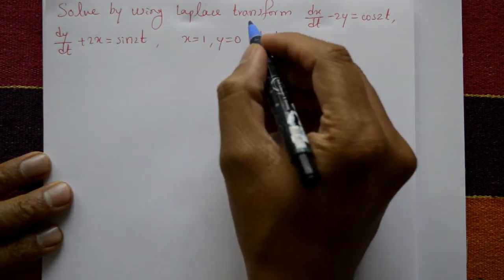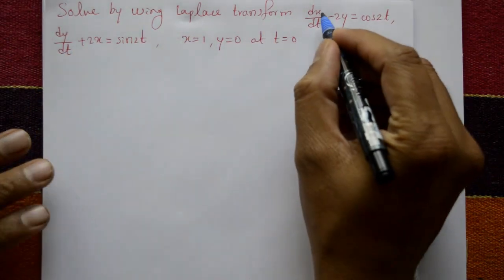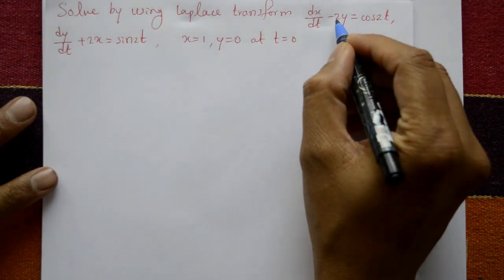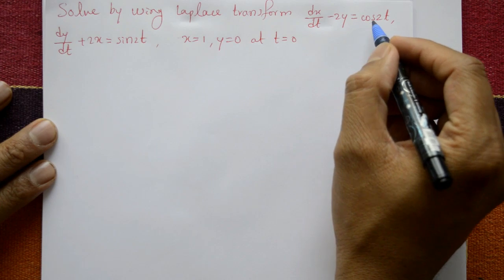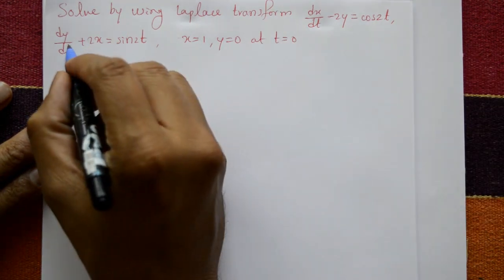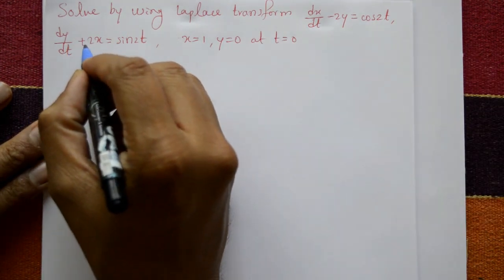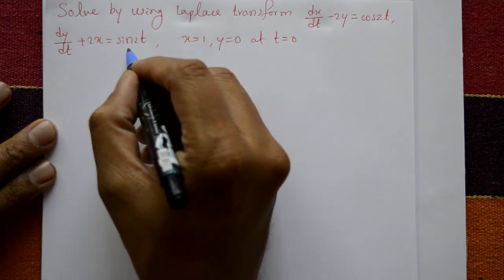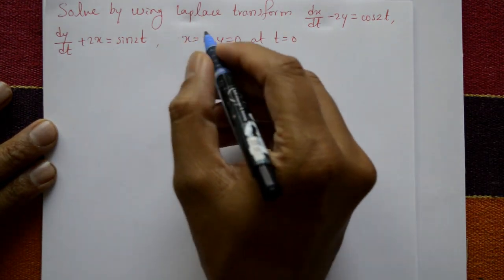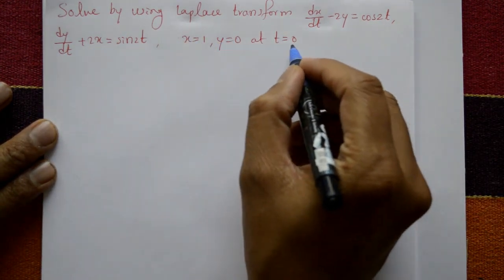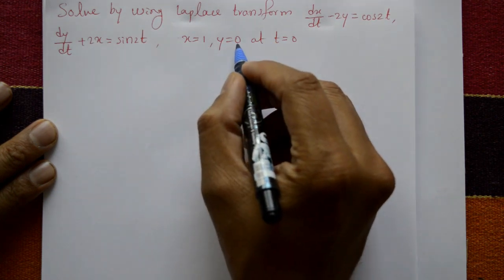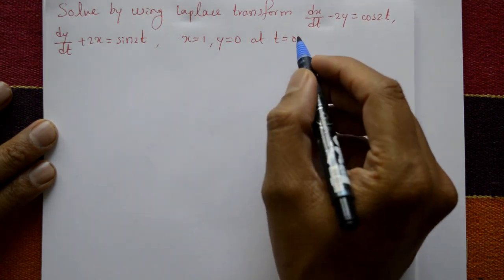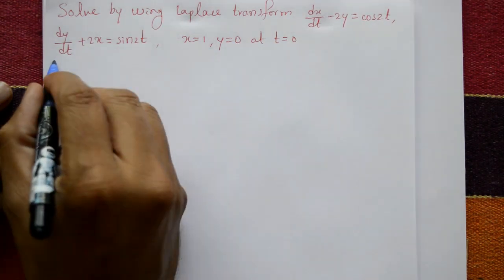Solve by using Laplace transform: dx/dt minus 2y equals cos 2t, and dy/dt plus 2x equals sin 2t, using initial conditions x equals 1 and y equals 0 at t equals 0.